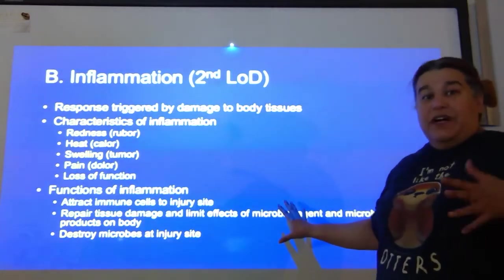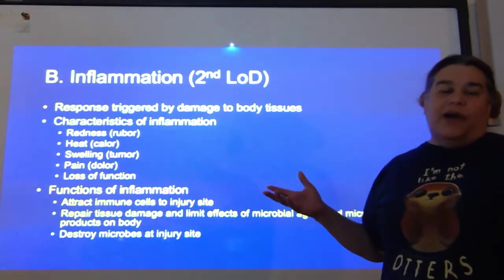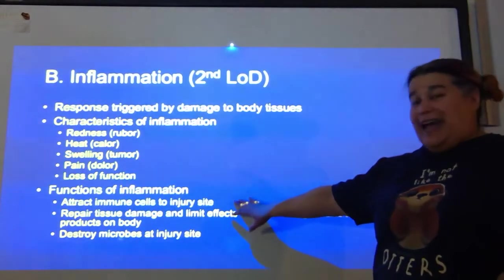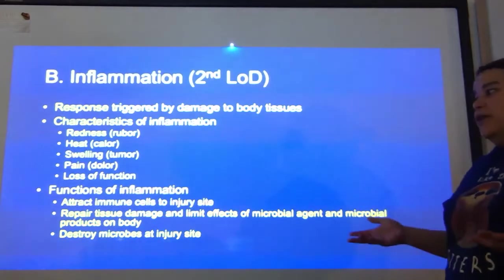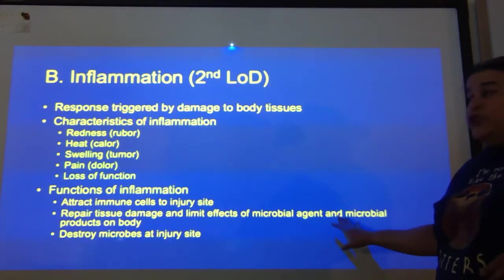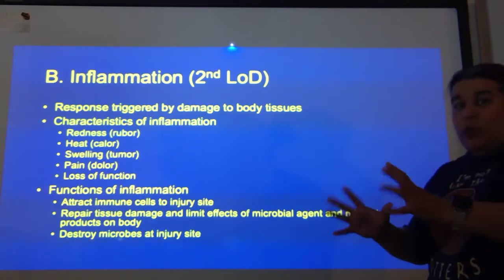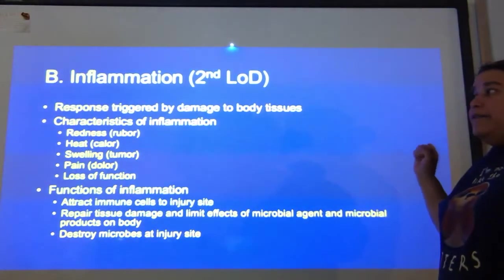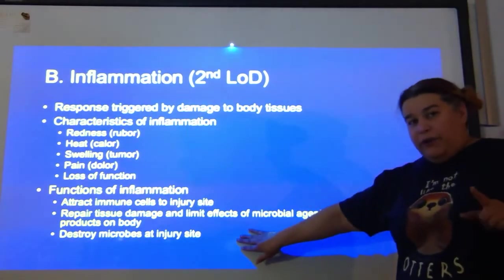Why do we have an inflammatory response? One of the first things we always want is for immune cells to go to where damage happened — having these chemicals released attracts immune cells to the site. We also want repair of the tissue damage, and if microbes have entered, we want to limit their effects, isolate them to just that area, and ultimately destroy microbes at that site.